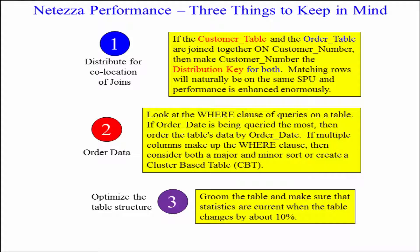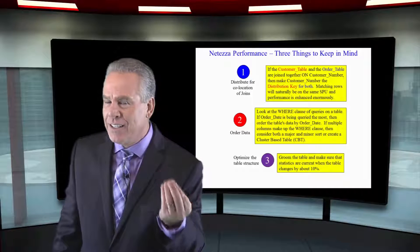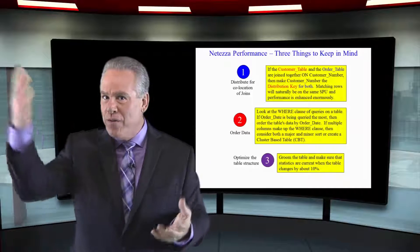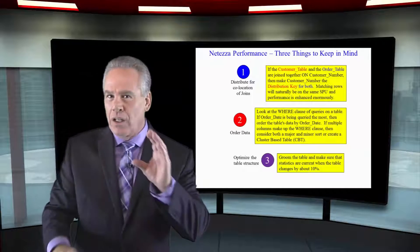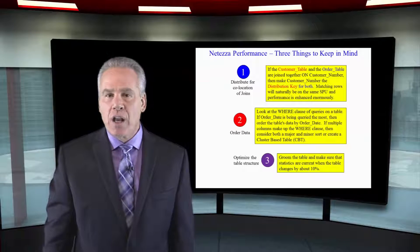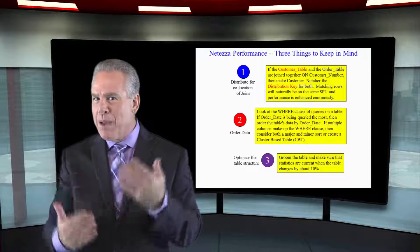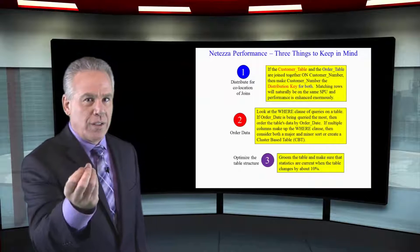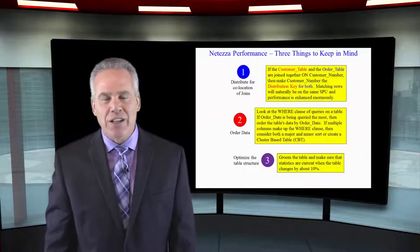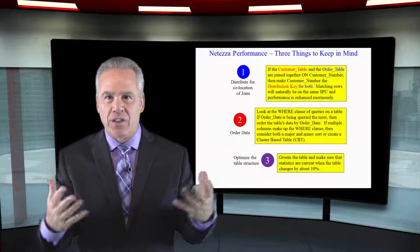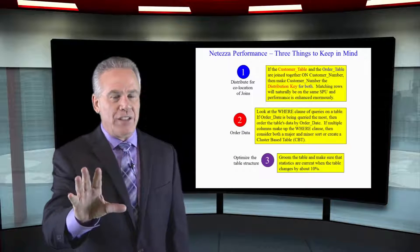The last thing you want to think about is organization and table structures. You're going to want to groom tables, and you'll want to make sure your statistics are up to date. You collect statistics on these tables so the optimizer knows how big the table is and what kind of design it's under. Every time you insert, update, or delete data and the table changes by about 10%, you'll want to groom it and collect statistics again. If you do these three things, that's all you need to do to have a world-class Netiza system performing at optimal speeds for your users.